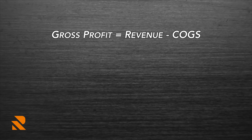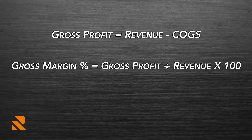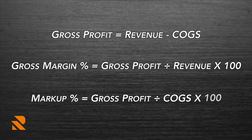Let's talk about gross profit for a minute. Gross profit is simply revenue minus cost of goods sold. Margin, or gross margin, is revenue minus your COGS — your gross profit — divided by your revenue, multiplied by 100. That gets your gross margin percent. Markup is revenue minus COGS, or gross profit, divided by your COGS, multiplied by 100. That's why there's a difference between margin and markup.